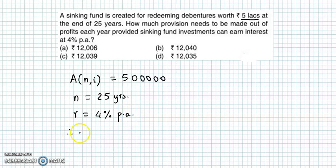The rate of interest is 4% per annum. We convert this in decimal form. So i is 4 upon 100, which is 0.04. And we have to find the annual installment, that is A.